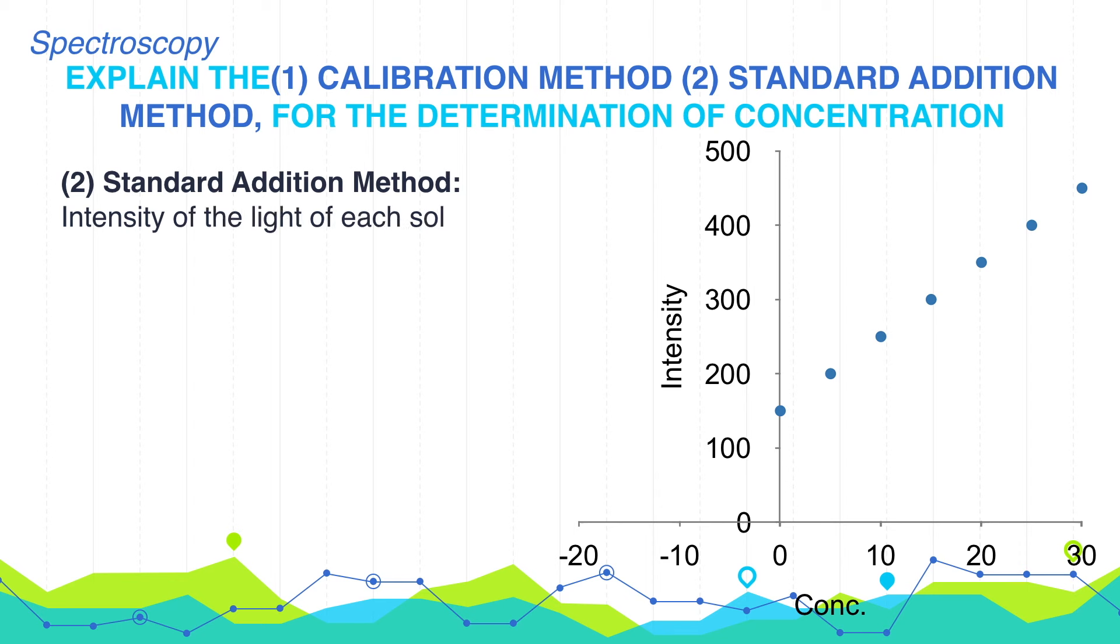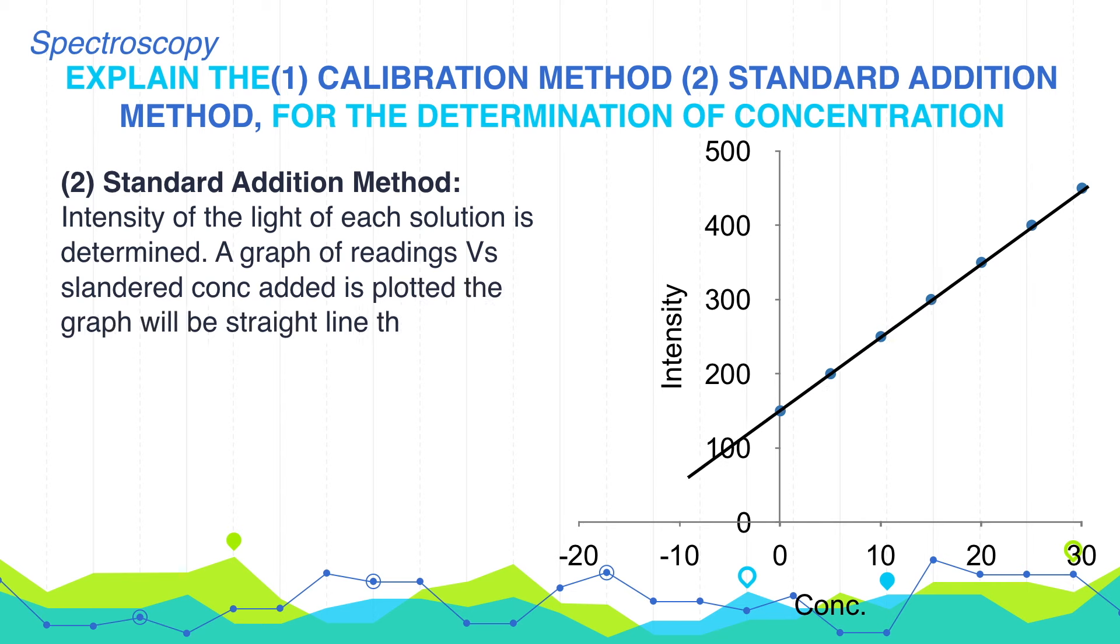Intensity of the light of each solution is determined. A graph of readings versus standard concentration added is plotted. The graph will be a straight line. This line is extrapolated on the concentration axis, which gives the concentration.